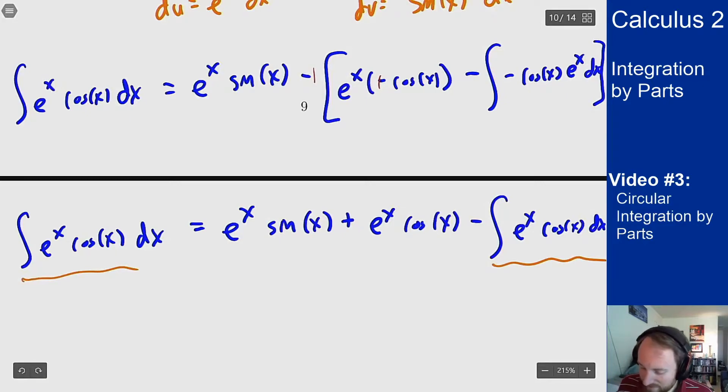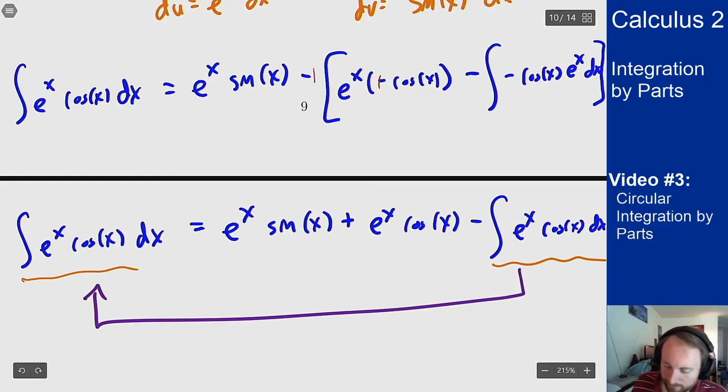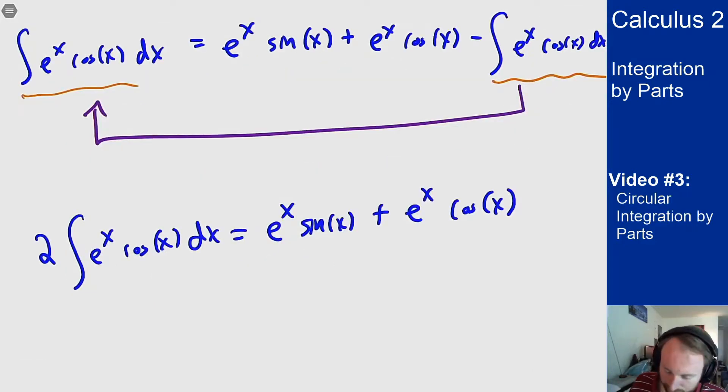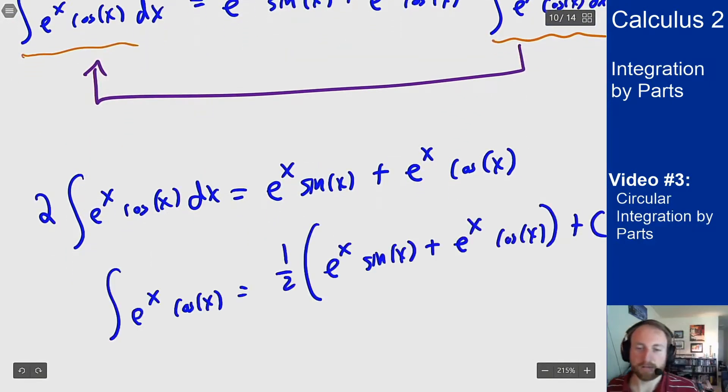So what I'm going to do now is I'm going to take this and add it to the other side and then solve it for the integral. So when I add that over I get two copies of e to the x cosine of x dx equals the same expression we had here before, and I just divide both sides by two. And then you're plus c because it's an indefinite integral.